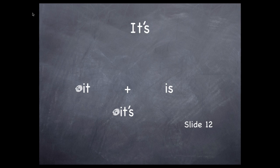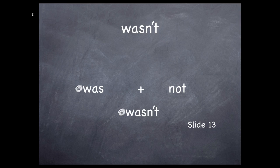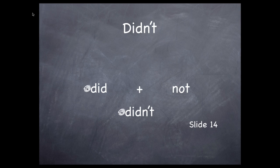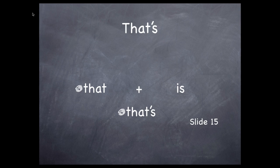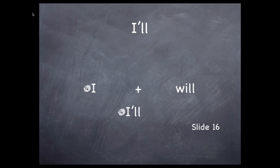Let's look at these one at a time and discover the two words that were put together and how they were joined. The word 'it' and the word 'is' are joined to make the contraction 'it's.' The apostrophe, which looks like a comma hanging in the air, takes the place of the letter I in the word 'is.' The word 'was' and the word 'not' merge to make the contraction 'wasn't' — the apostrophe takes the place of the letter O in 'not.' The word 'did' joins the word 'not' to make 'didn't' — again the apostrophe takes the place of the O in 'not.' The word 'that' combines with 'is' to form 'that's' — the apostrophe takes the place of the letter I in 'is.' The word 'I' joins the word 'will' to form 'I'll' — the apostrophe takes the place of the letters W and I.